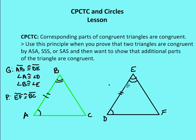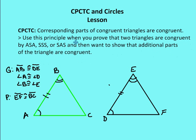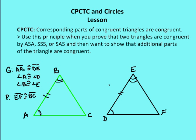So what does that mean in plain English? I'm given that AB and DE are congruent, angle A and angle D are congruent, and angle B and angle E are congruent. So I know that I have two congruent triangles, ABC and DEF. In order to say that EF is congruent to BC, I need to first say the two triangles are congruent — which I've done by angle-side-angle — and then say corresponding parts of congruent triangles are congruent. First you prove the two triangles congruent, then you prove that the corresponding parts are also congruent.